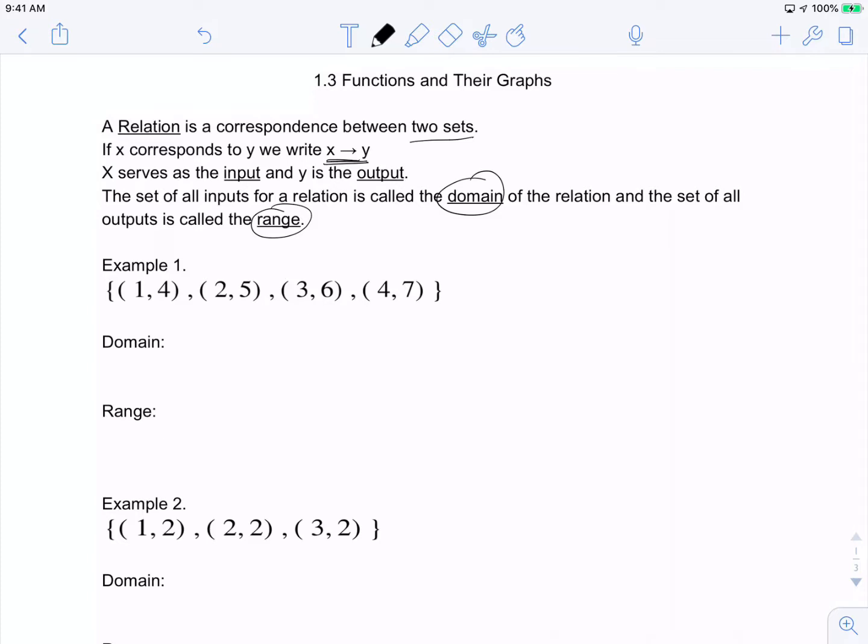In our first example, the domain is going to be all of our x values: 1, 2, 3, and 4. Since this is a set, we need to write it in set notation with braces.